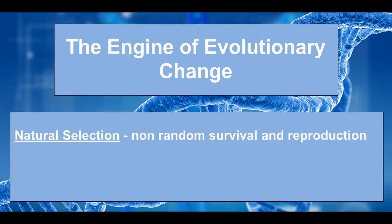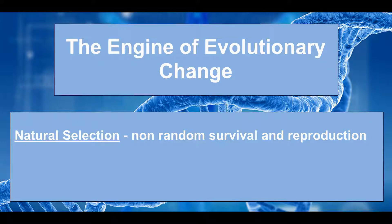Natural selection is the process by which the traits of some individuals in a population allow them to survive and reproduce more effectively than others. Genetic drift arises due to random changes in the genetic composition of a population from one generation to the next.